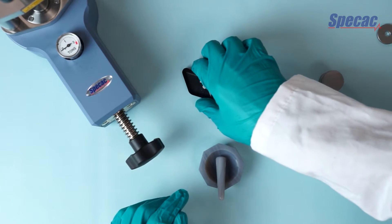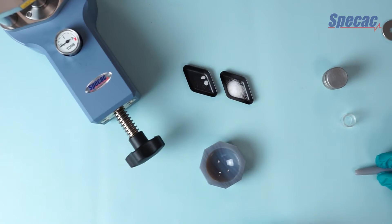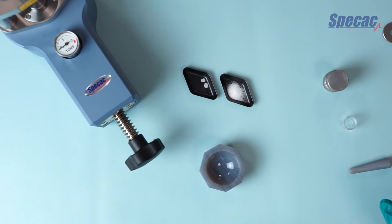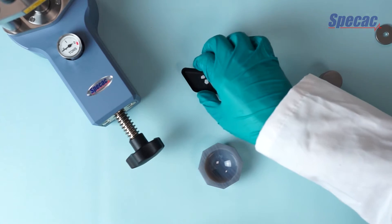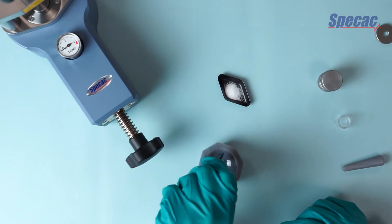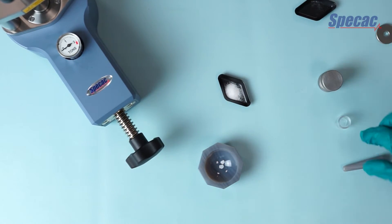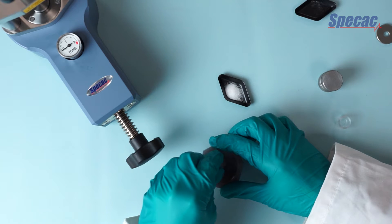Here we are with the Specac Mini Press Pellet Kit. We've pre-prepared KBR powder and stearic acid crystals as the sample. They're pre-weighed in a ratio of about 100 to 1, which is the recommended starting point.